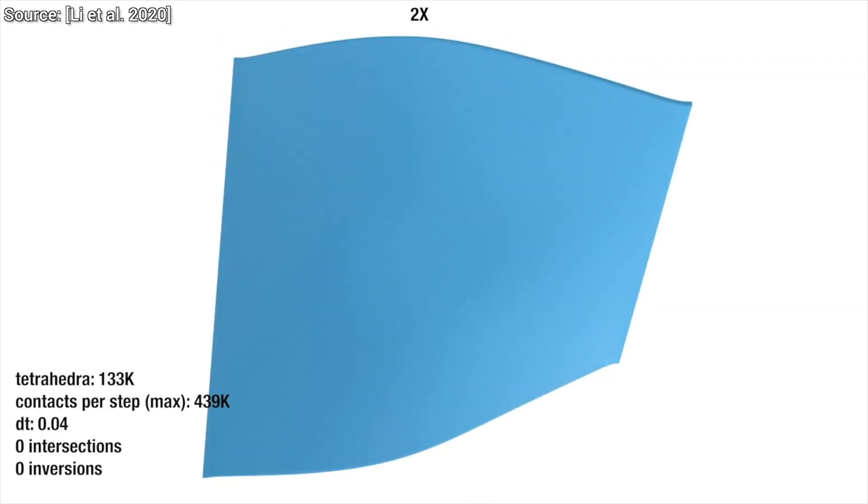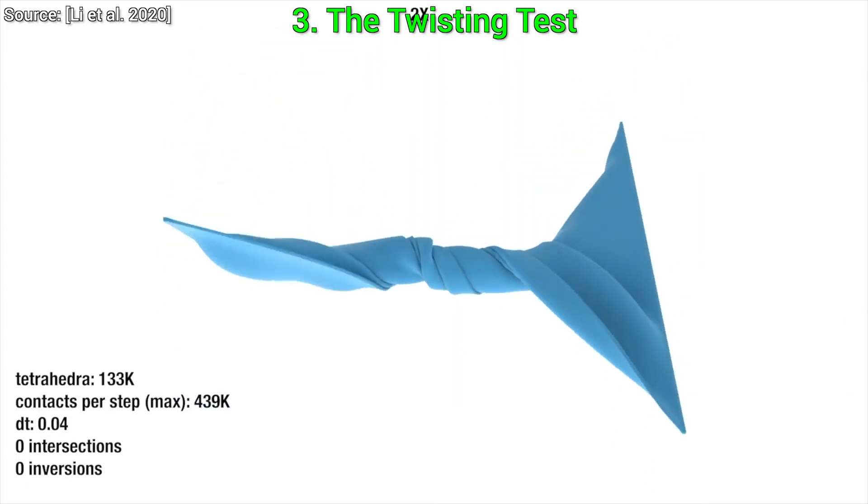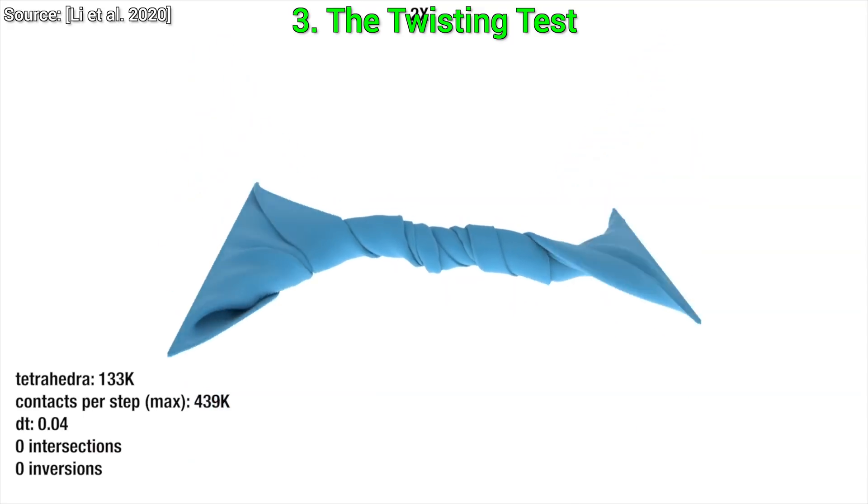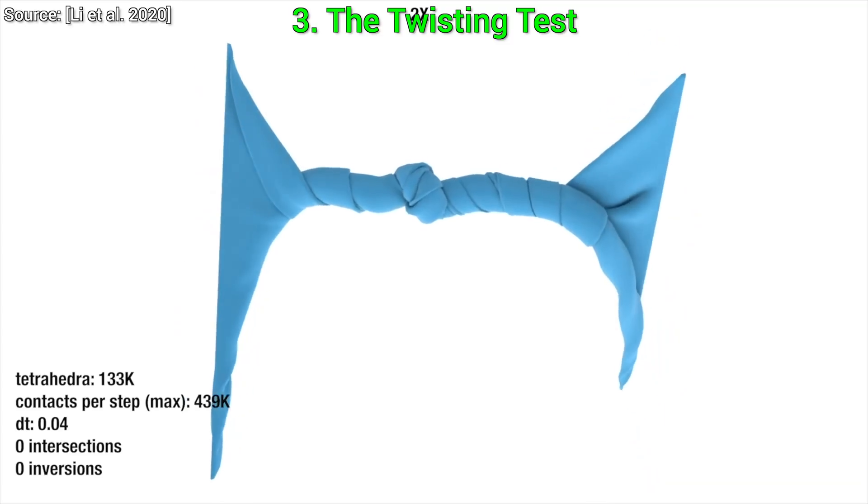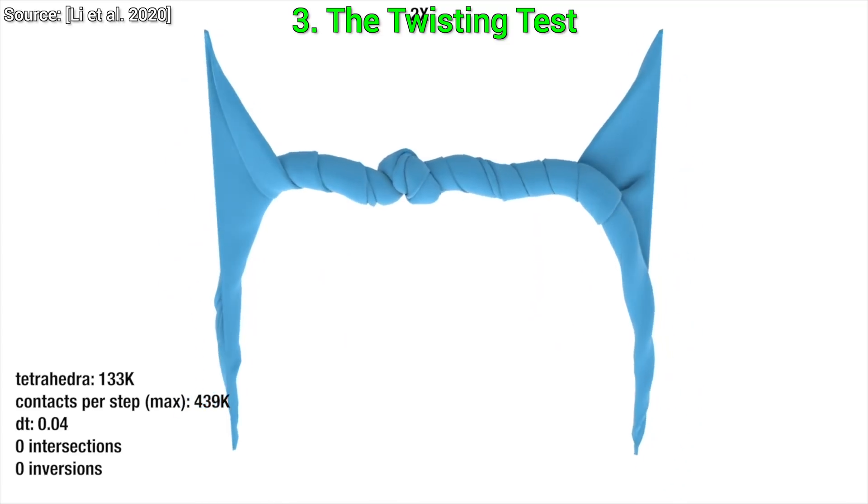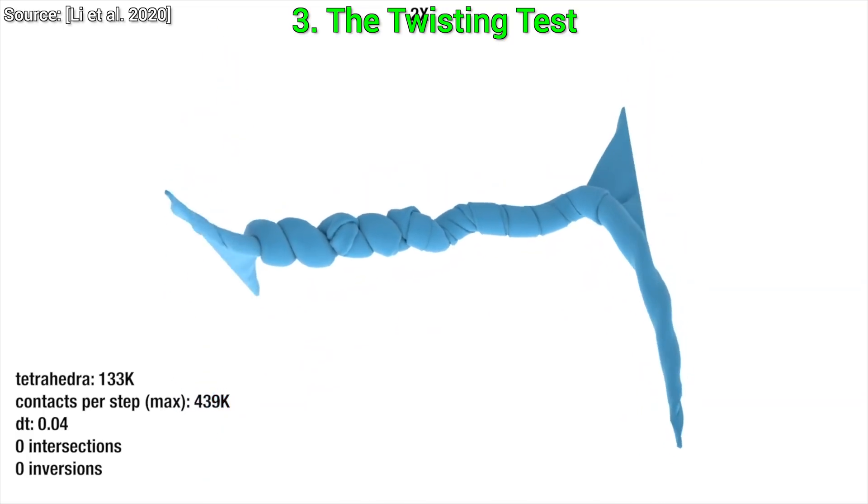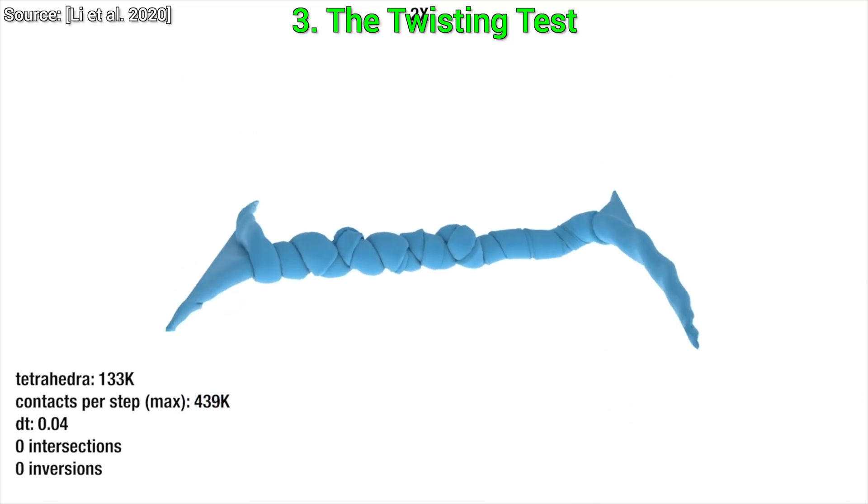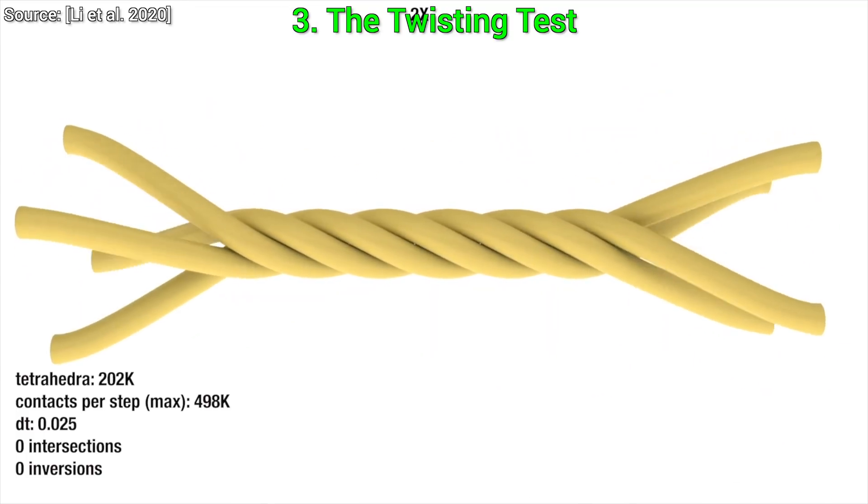Experiment number three: the twisting test. We take a piece of mat, and keep twisting, and twisting, and still going. Note that the algorithm has to compute up to half a million contact events every time it advances the time a tiny bit, and still, no self-intersections, no anomalies. This is crazy.